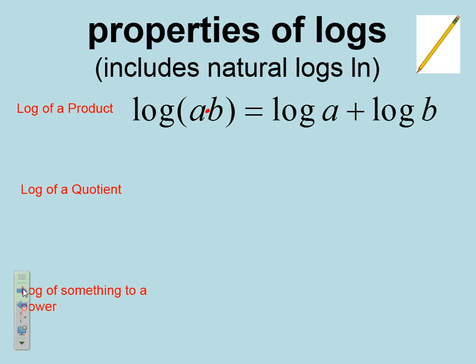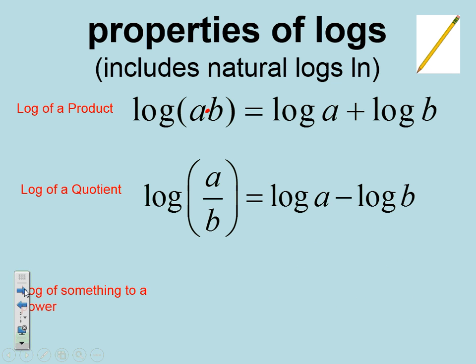Our next property is the log of a quotient. Quotient means to divide. When we are dividing, we're going to expand it out by saying log a minus log b. So multiplication goes with addition, and division goes with subtraction.